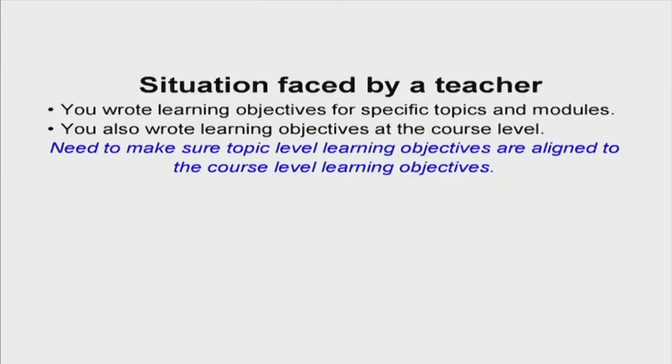You now have almost all the tools you need to do course design. Here is the situation a teacher faces at this point: you wrote learning objectives for specific topics and modules, and also at the course level. But the next important point is to make sure that the topic-level learning objectives and the course-level learning objectives are aligned with each other. One is at a specific level in the course; the other is for the course as a whole. They cannot be independent — they must be exactly aligned.